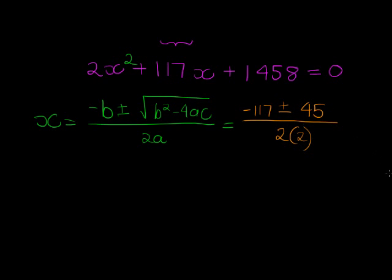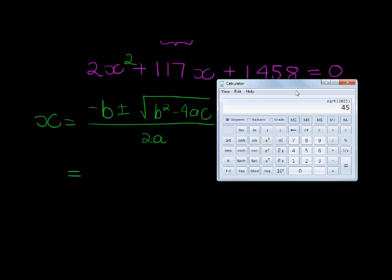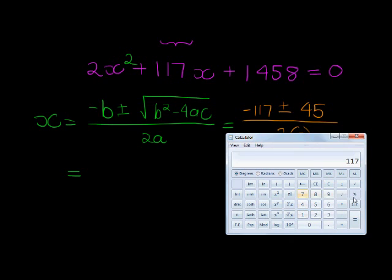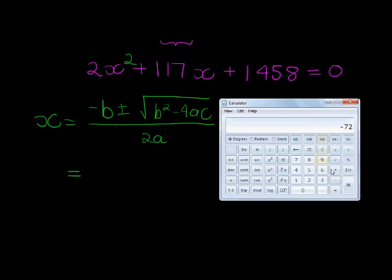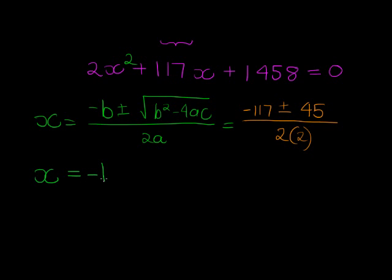Why did I promise it will be a nice number? Because they said initially that all of the numbers are integers. If it's not a nice number you have made a mistake somewhere. So let's calculate it. -117 plus 45, we first do the plus, equals -72 divided by 4. So that gives me x can be -18.